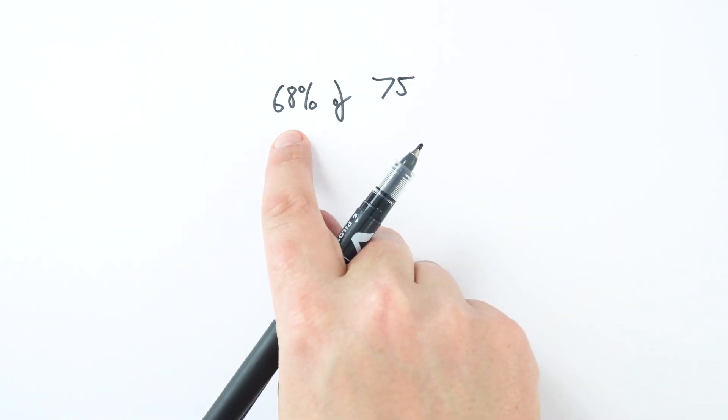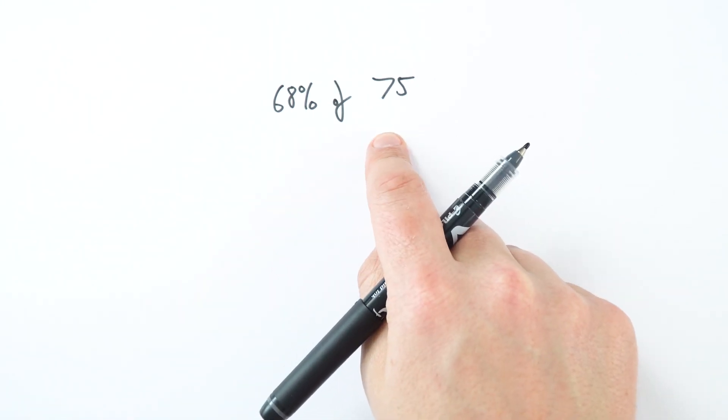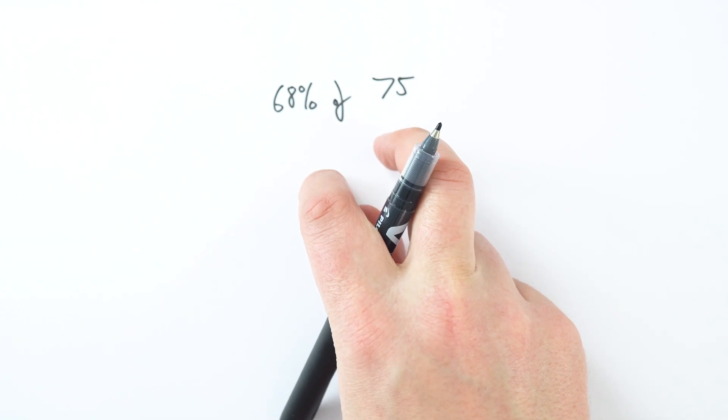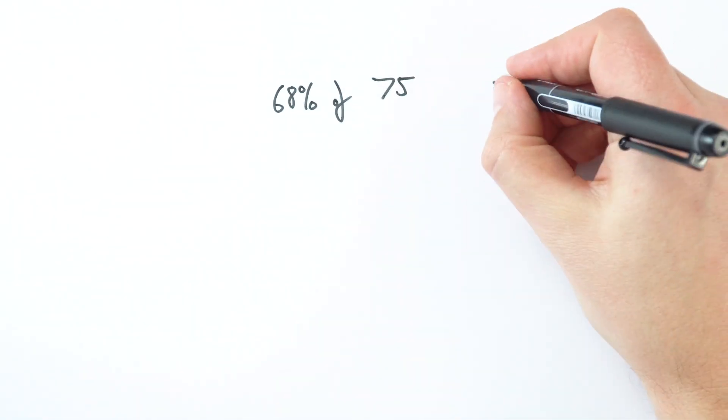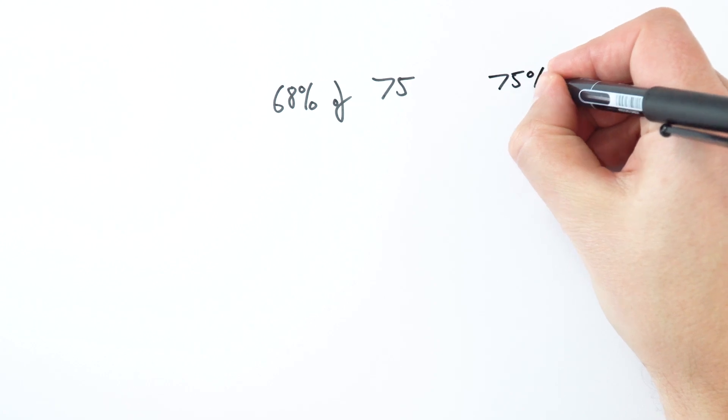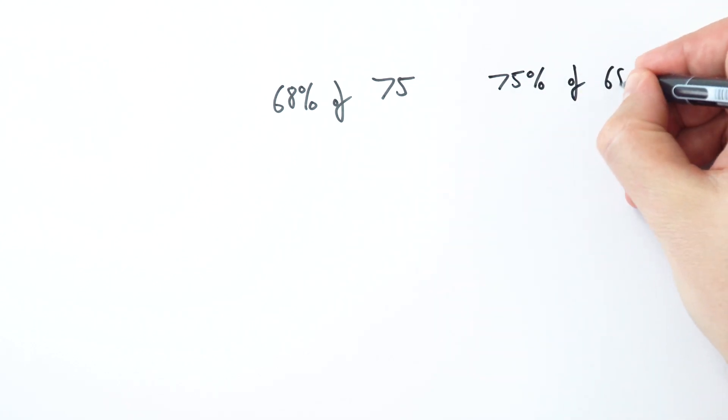Say for example we wanted to work out 68% of 75. Well this is a really simple sum to do in your head once you realise that 68% of 75 is the same as 75% of 68.